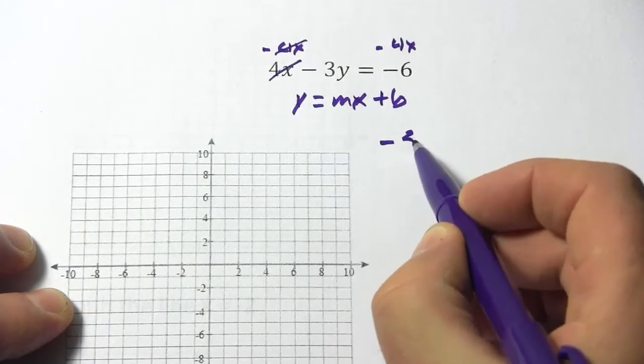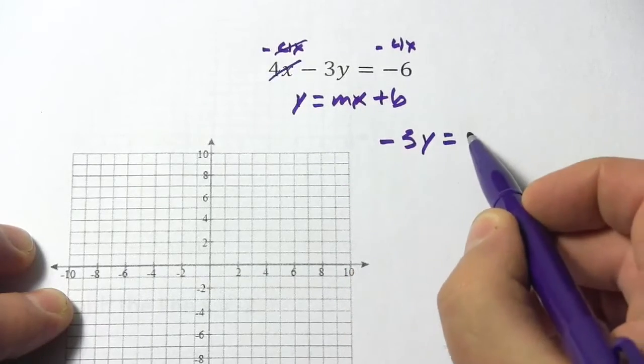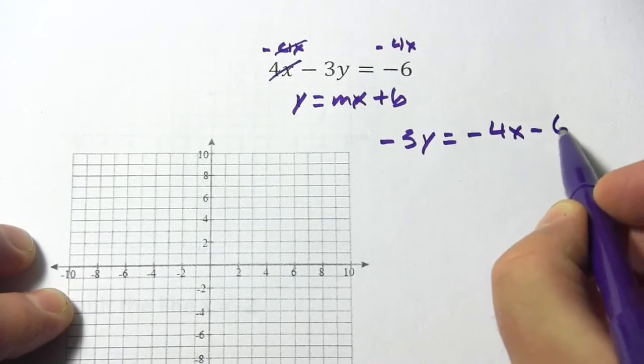So over here we've got negative 3y. And over here I'm going to write this as negative 4x minus 6.